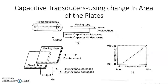Now let us see capacitive transducers using change in area of the plates. In this type, the capacitance change occurs because of the change in effective area of the plates. Since capacitance is directly proportional to effective area, any physical quantity causing a change in overlapping area will change the capacitance of the capacitor.